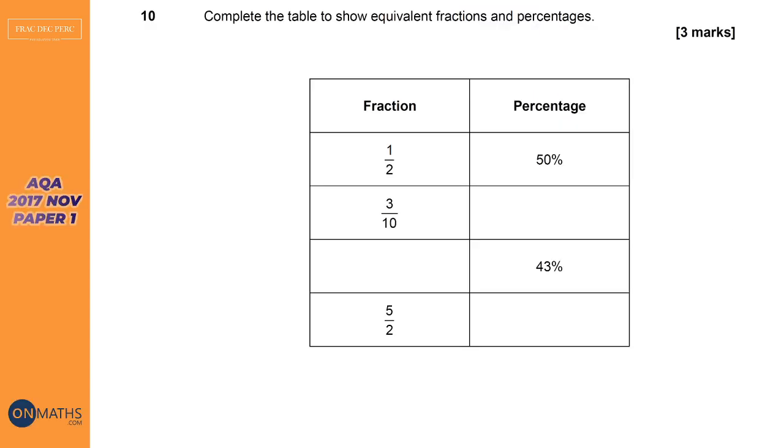Moving on to our AQA offering. And this is slightly later in the paper, kind of question 10. The first one's the same, so 3 tenths, it will be 0.3, but it's asking for a percentage. So to make a decimal a percentage, you just times it by 100. So 0.3 times 100. So times 10 would be 3, times 10 again would be 30.